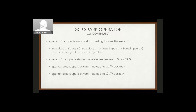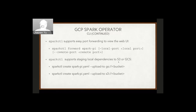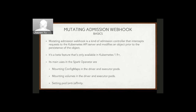SparkCTL also supports port forwarding to view the web UI — you just know the Spark job name like 'spark-pi' and don't need to find the pod manually first. It also supports staging local dependencies to S3 and GCS. For dependencies specified in your YAML, you can specify your GCS or S3 bucket to upload them remotely, but you need to configure authentication upfront — details are in the documentation.